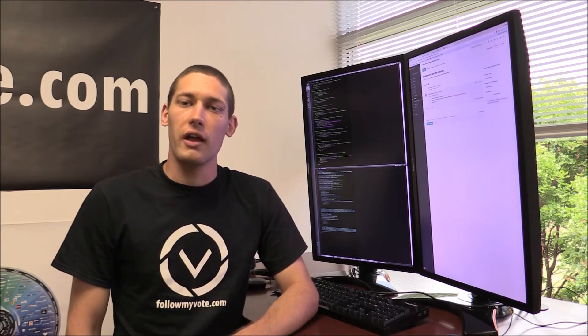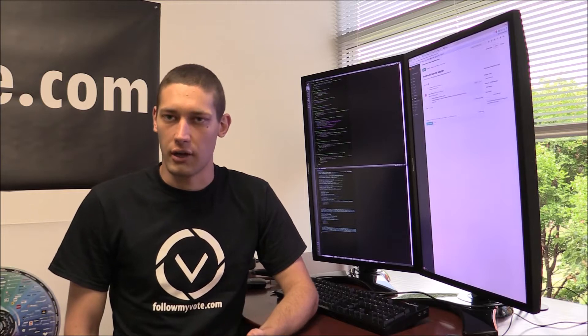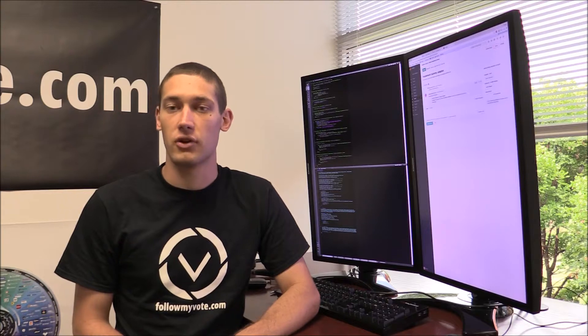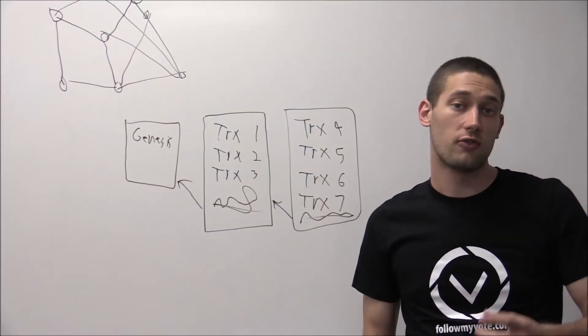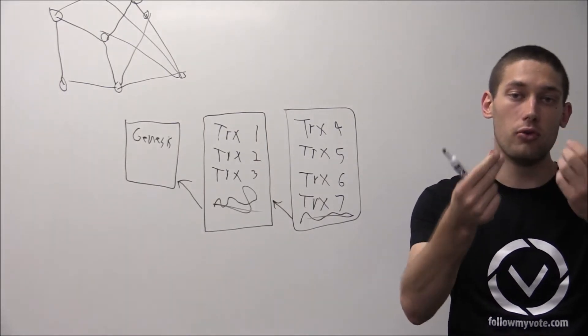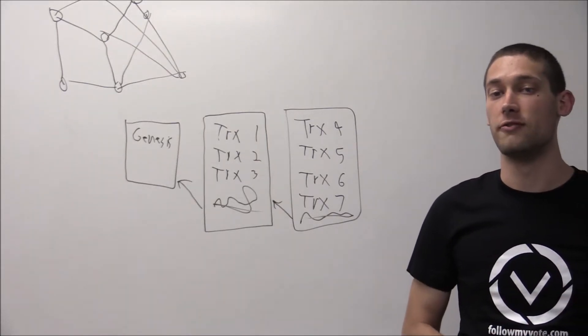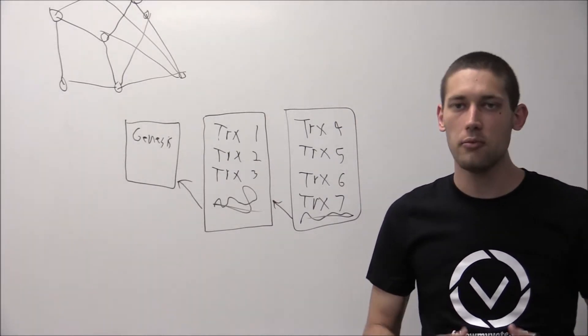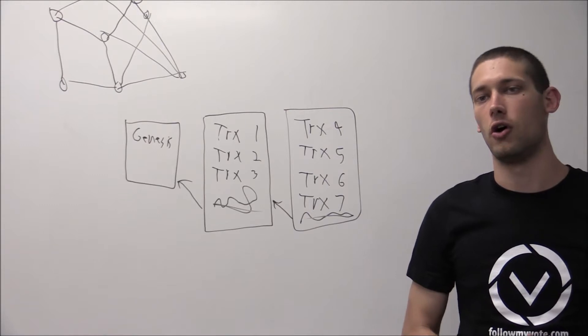You can create a voting system on a blockchain by formulating the various steps involved in voting as transactions on the blockchain. First of all, you have ID verification. A person has to prove that they are actually allowed to vote in a given election. This can be done as a transaction on the blockchain.